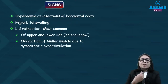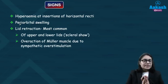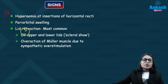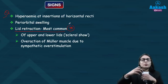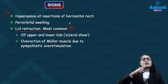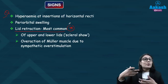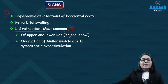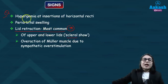The symptoms seen include red eye, photophobia, and lacrimation, along with puffy eyelids. There are various important signs in thyroid eye disease. The first and most common sign is lid retraction, where the upper and lower lids are retracted due to overaction of sympathetic stimulation acting on the Müller's muscles, leading to retraction of both lids and scleral show.